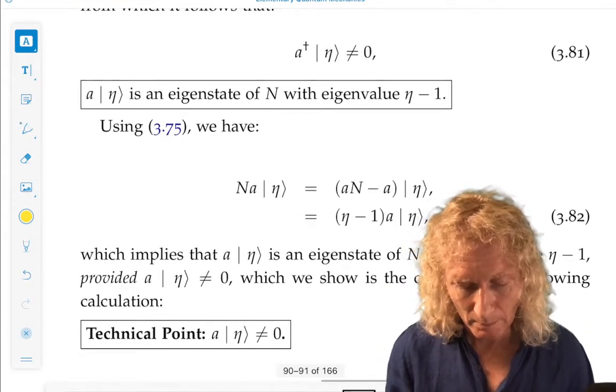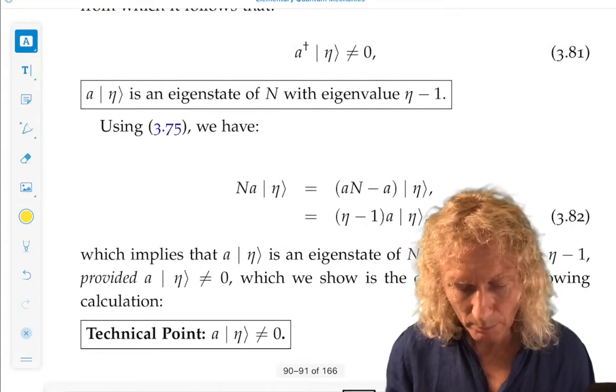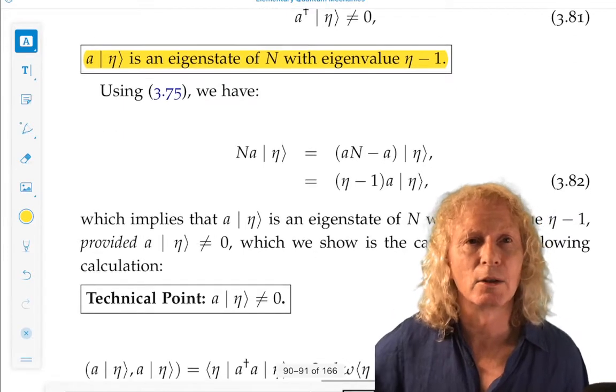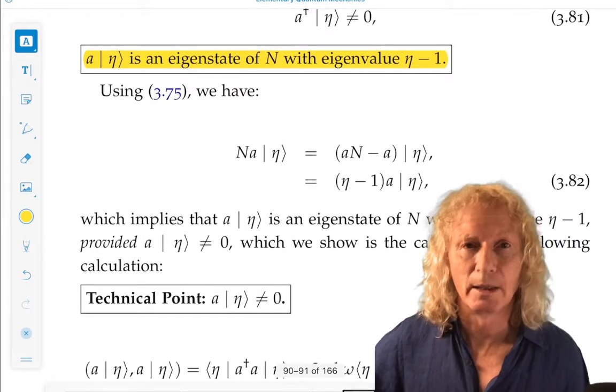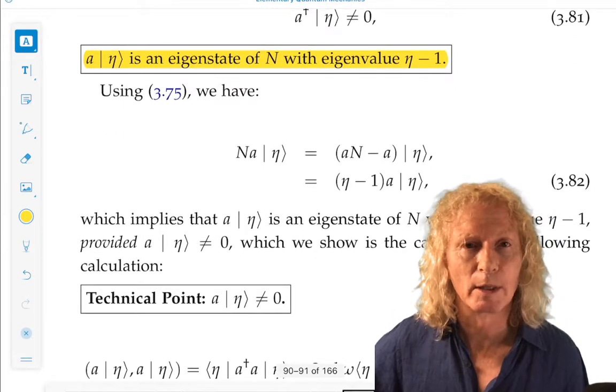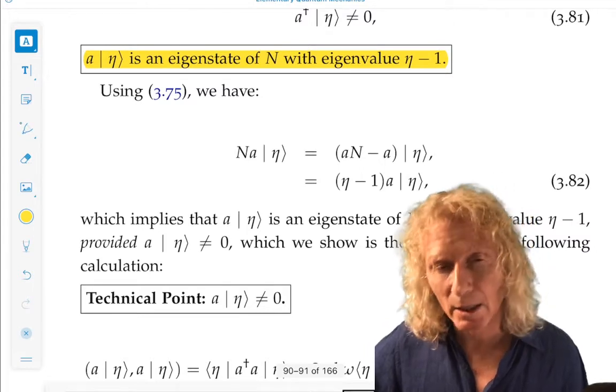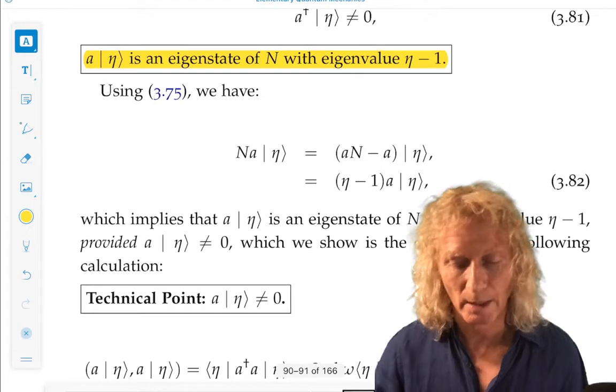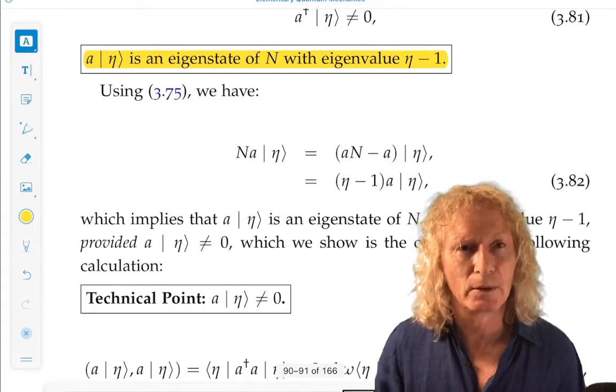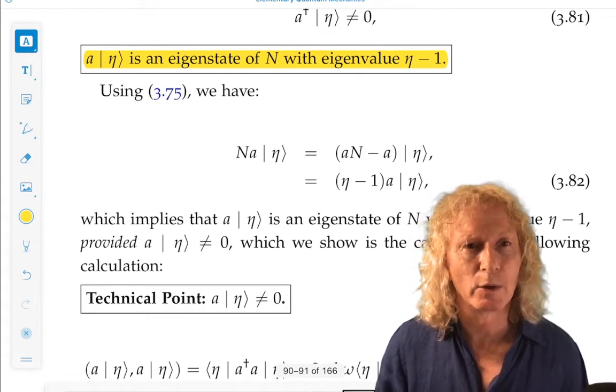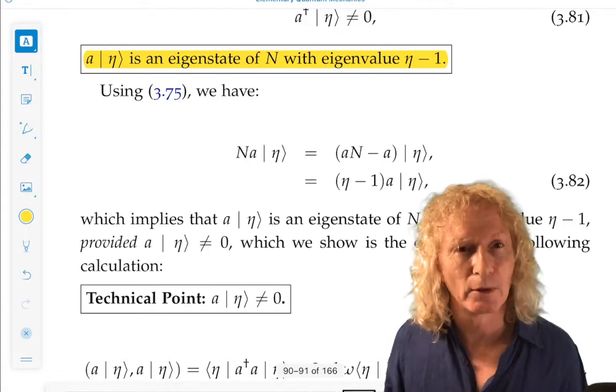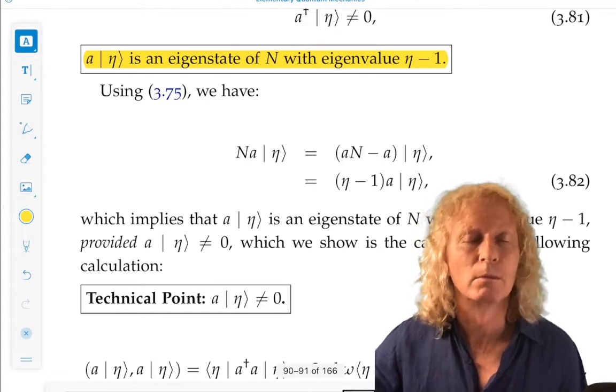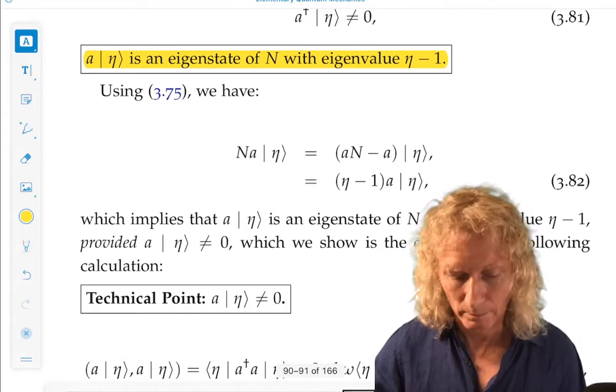Then the next point we want to work out is that a acting on eta is an eigenstate of the number operator, but with eigenvalue eta minus one. There's our lowering operator. It acts on an eigenstate with eigenvalue eta, it delivers us an eigenstate, but it lowers the eigenvalue by one.